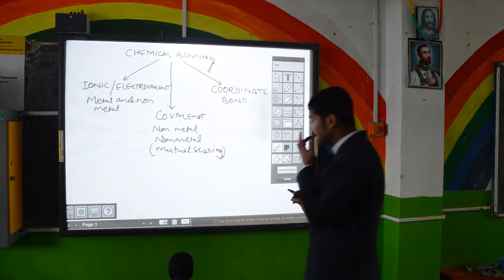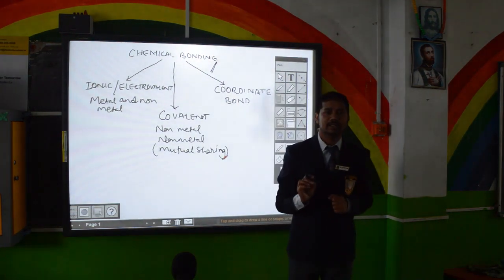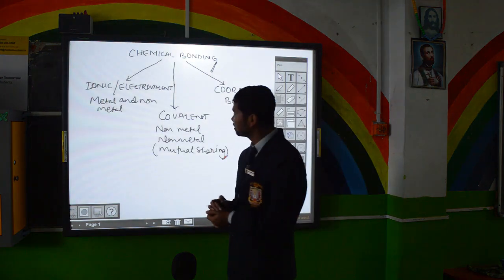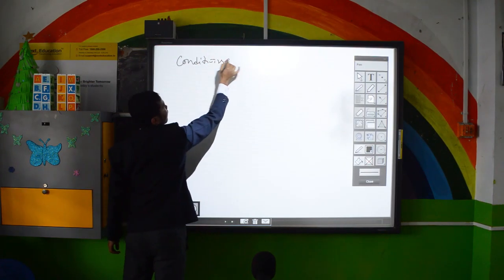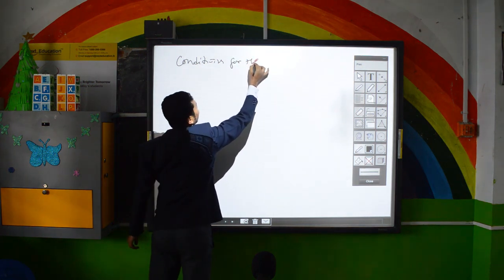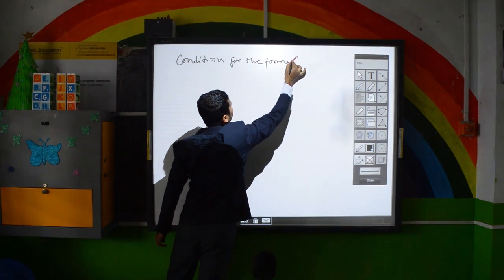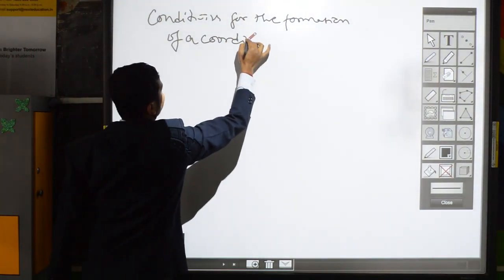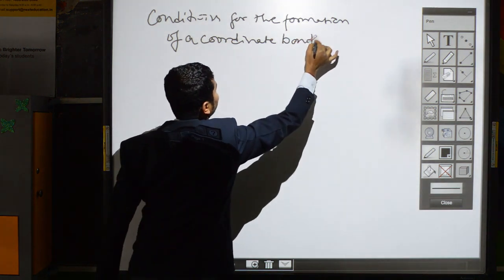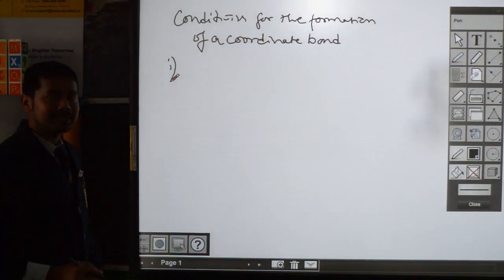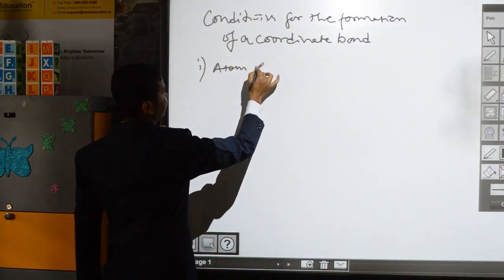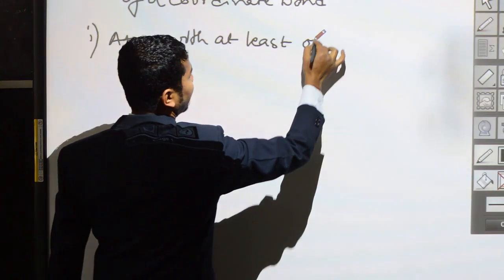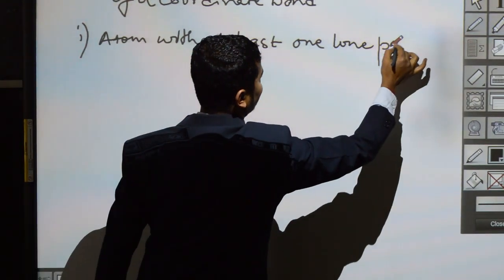Hydronium ion and ammonium ion have this coordinate bond. Now, what are the conditions required for the formation of a coordinate bond? Number one is an atom with at least one lone pair of electrons.